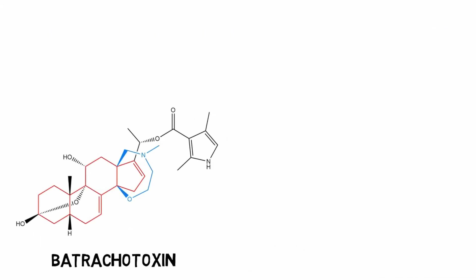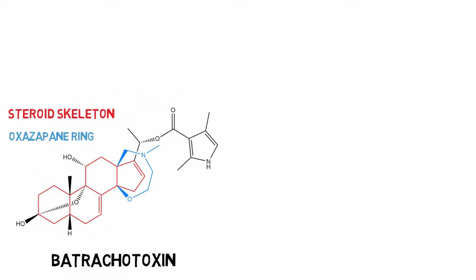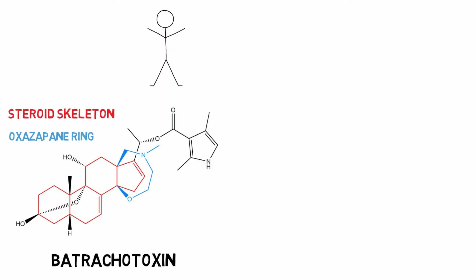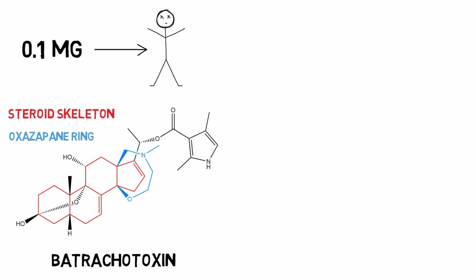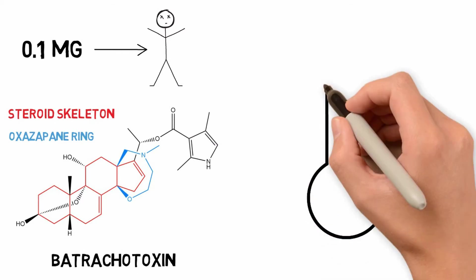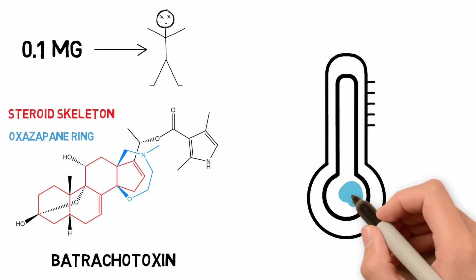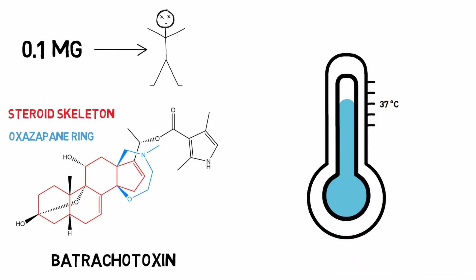Batrachotoxin, which is a steroidal alkaloid containing an oxazepane ring, is one of the most potent alkaloid poisons known. Being over 1,000 times more poisonous than cyanide, just 0.1mg — the equivalent of two grains of salt — can kill an adult human being. Its activity is temperature dependent, with maximum activity at 37 degrees Celsius — the temperature of our bodies.